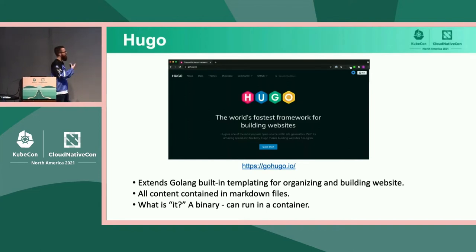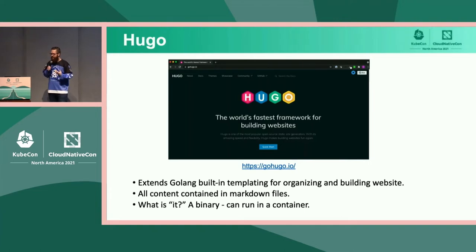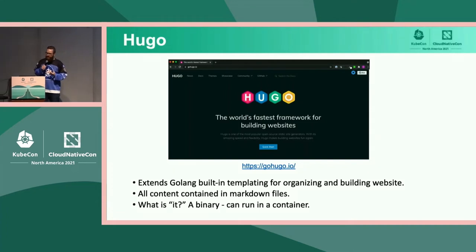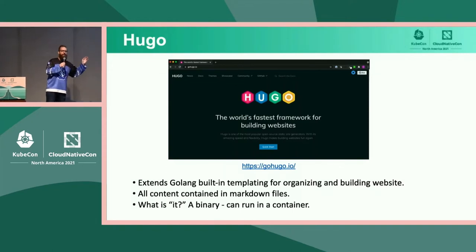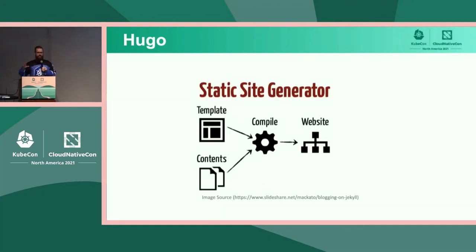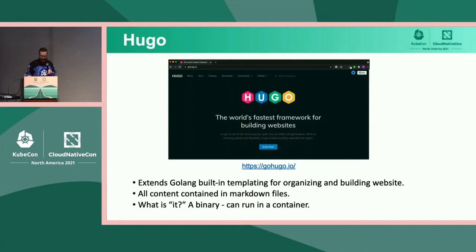Hugo is the engine we're using to generate our static website. When learning a new technology, I need to know what the thing is. At the end of the day, Hugo is written in Golang — it's a Go binary. You could run it in a container or as a binary on your host system. Hugo takes your Markdown, jams it with HTML, and creates your beautiful webpage. Key points: it extends Golang's built-in templating for organizing and building the website, all content is contained in Markdown files, and it is a binary that can be used in many different ways.